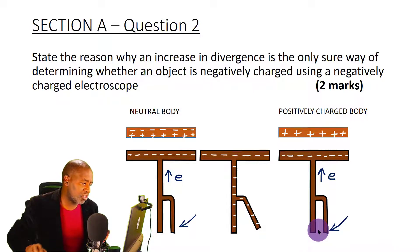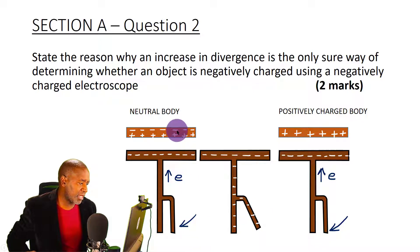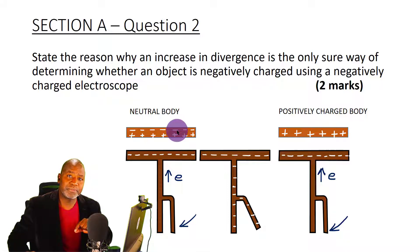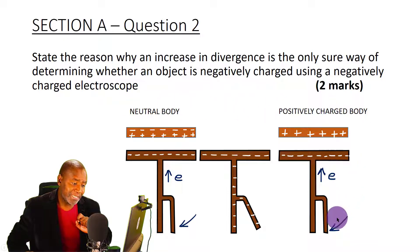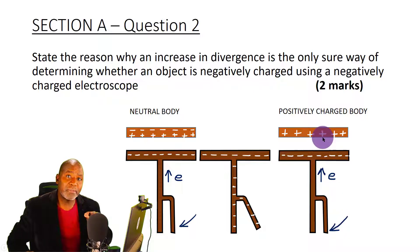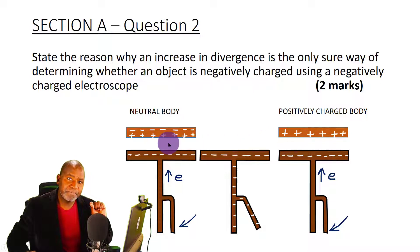At this point, if we were trying to identify the type of charge on the body brought close, we would not be able to do so - because whether the body is neutral or positively charged, it produces the same effect. So here we cannot tell the charge on this body.